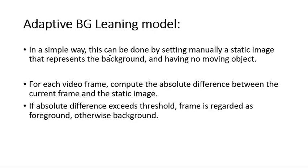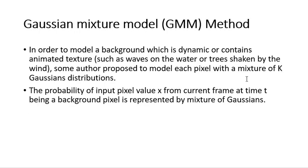The first method we used is the Adaptive Background Learning model. This is a simple way to manually set a steady image that represents the background, and a current frame which is the next image to the steady image. For each video frame, we compute the absolute difference between the current frame and the steady image, and apply a threshold technique — if the absolute difference exceeds the threshold, the frame is regarded as foreground, otherwise background.